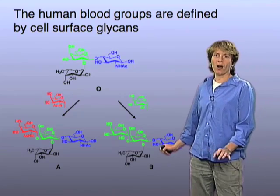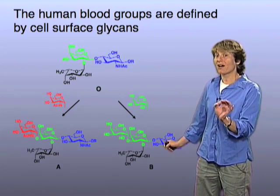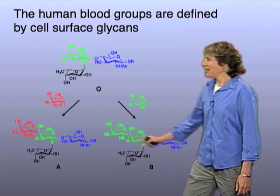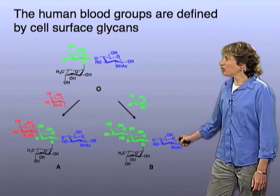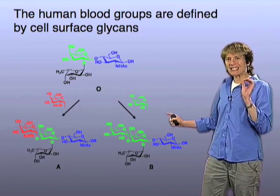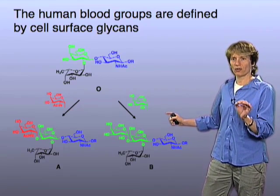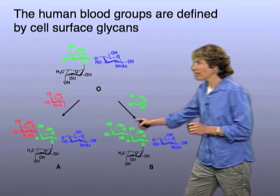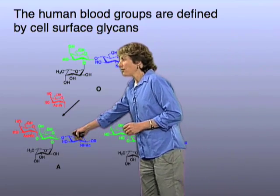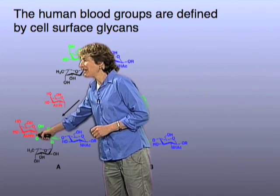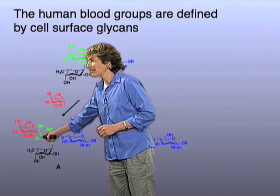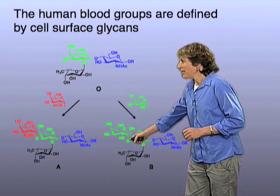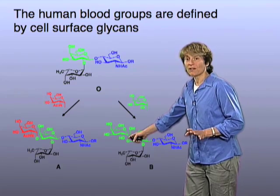For those who are really into chemical detail, if you look closely at the structure of A and the structure of B, you'll notice there's a single chemical functional group that is different between these two structures — it's very subtle. Right here in blood type A, there's an N-acetamido group, an N-acetyl group. Over here in blood type B, it's a hydroxy group. That's the only difference.